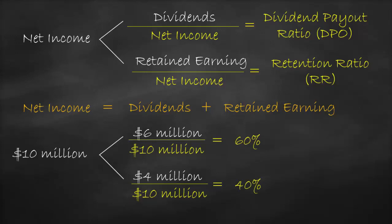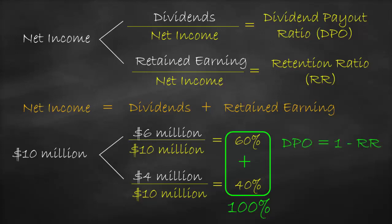Since net income equals dividends plus retained earnings, the dividend payout ratio plus the retention ratio must be equal to 100%, or 1. Consequently, we can rewrite the dividend payout ratio formula as 1 minus the retention ratio. Furthermore, we could rewrite the retention ratio formula as 1 minus the dividend payout ratio.